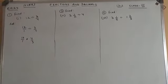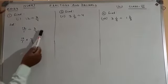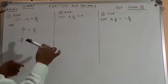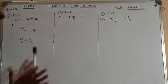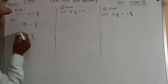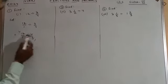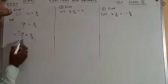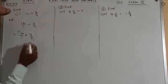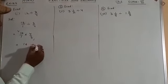This fraction will become reciprocal: 3 upon 4 becomes 4 upon 3. Now what you have to do? 3 and 3 cancel, 4 and 12 cancel. Now multiply numerators: 4 times 4 equals 16. Denominator is 1. So the answer is 16.